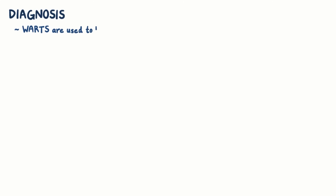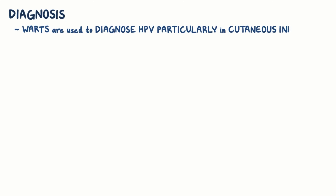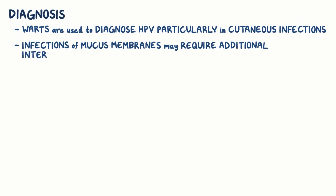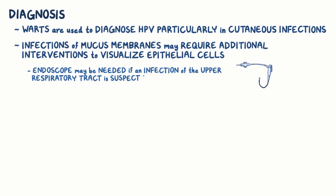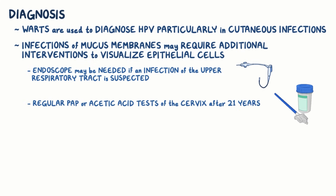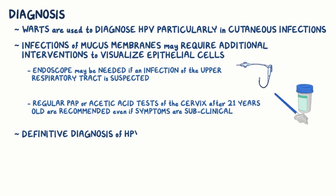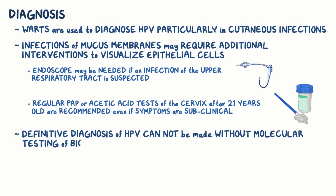Warts are used to diagnose HPV, particularly in cutaneous infections. Infections of mucous membranes may require additional interventions to visualize epithelial cells. An endoscopy — a tube with a camera at the end — may be needed if an infection of the upper respiratory tract is suspected. And regular pap or acetic acid tests of the cervix are recommended after 21 years old, even if symptoms are subclinical. But a definitive diagnosis of HPV cannot be made without molecular testing of biopsied cells for viral DNA or RNA.